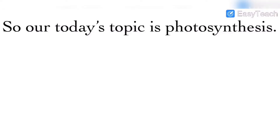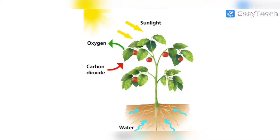Today our topic is photosynthesis. So what is photosynthesis? Here I have a diagram of photosynthesis. First, we need to know the materials the plants need to make their food. Photosynthesis is the process by which plants make their food.